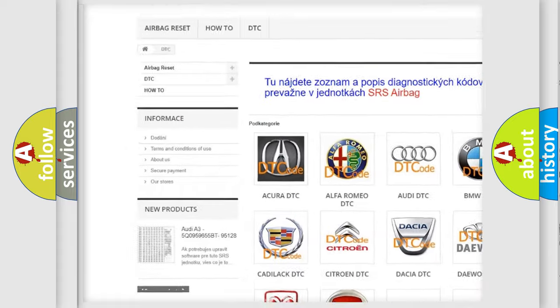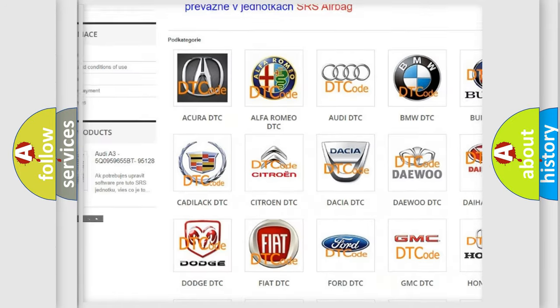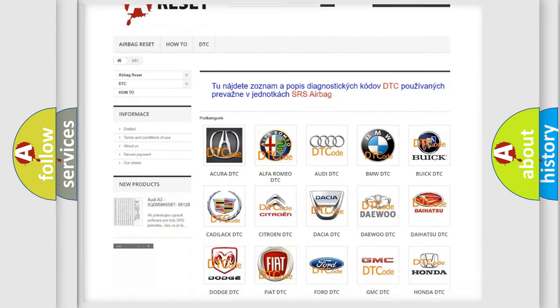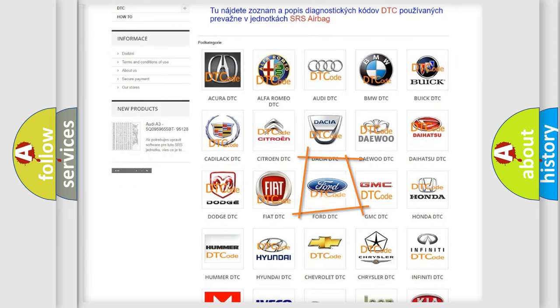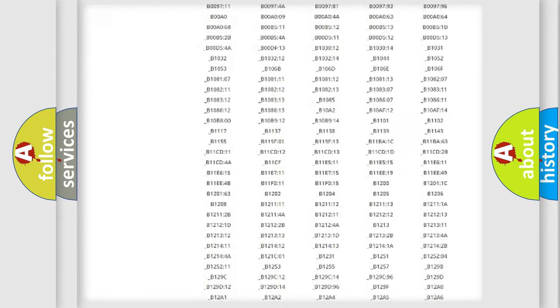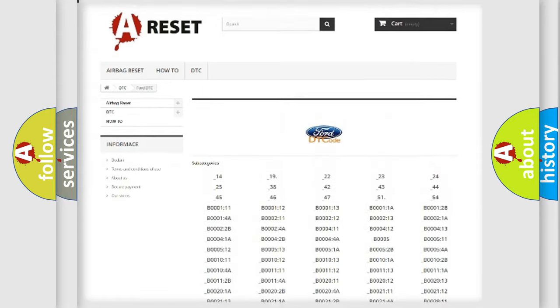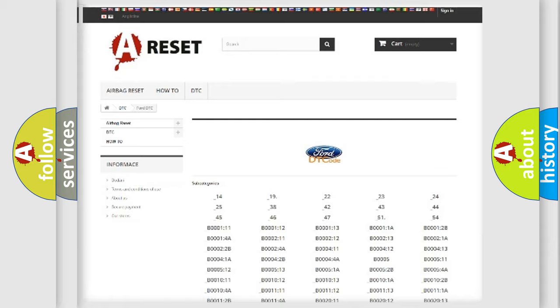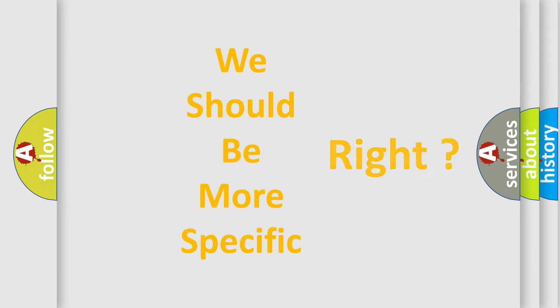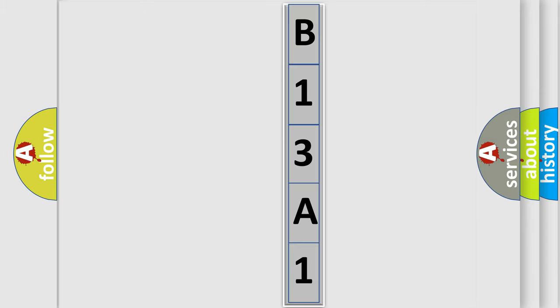Our website airbagreset.sk produces useful videos for you. You do not have to go through the OBD2 protocol anymore to know how to troubleshoot any car breakdown. You will find all the diagnostic codes that can be diagnosed in a car, also many other useful things. The following demonstration will help you look into the world of software for car control units.